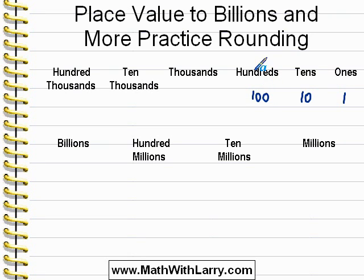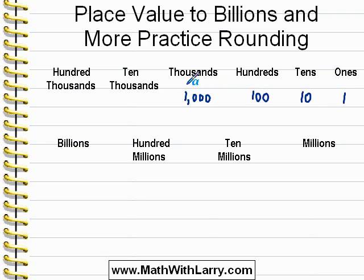We've worked with this in previous lessons. In thousands, we have four-digit numbers, and notice how I have to put a comma. This is just what we do in math — we put a comma in between the thousands place and the hundreds place. Every three spaces as we move to the left, we'll put a comma.